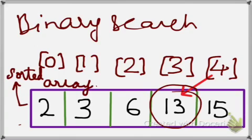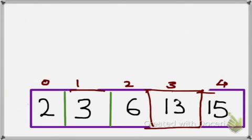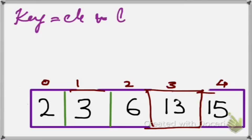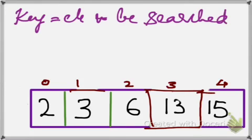How do we search using binary search? In this binary search, we take an element as the key, which is the element to be searched. Let us consider it key. And this, let us say it is low. And let us say this is high.